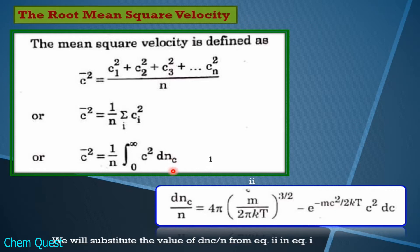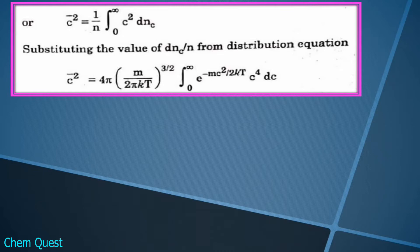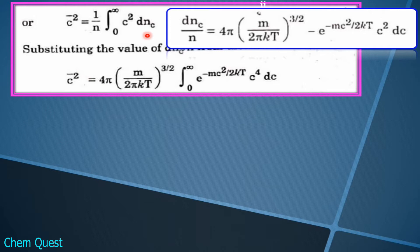dnc ka matlab — as we studied in the previous lecture — is the number of molecules traveling with velocity c. Now we have the Maxwell distribution equation, which gives the value of dnc/N. We will substitute the value of dnc/N from equation number 2 into equation number 1. For your ease, both equations are written here, and we have to substitute the value of dnc/N from equation 2 in place of dnc/N in equation 1.